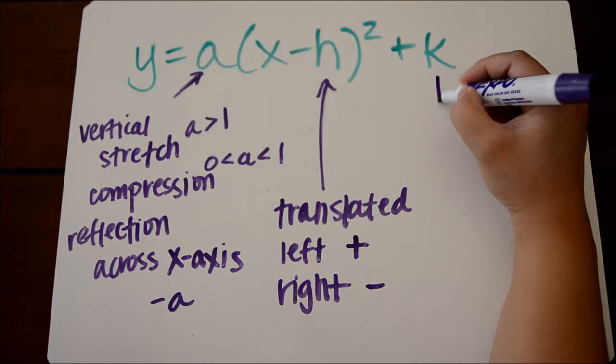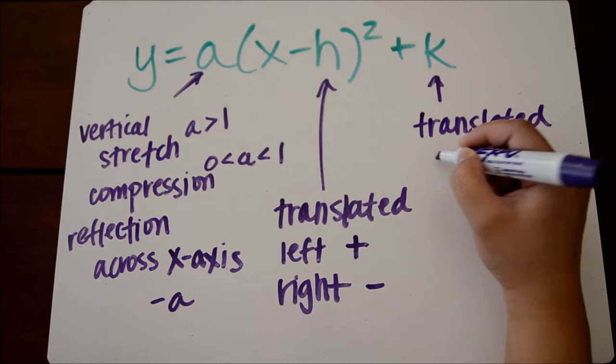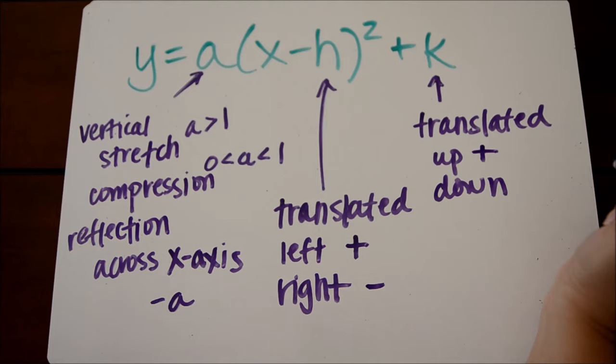Our k value tells us our translation up or down. But this does what you think it should do. If it's plus k, our graph translates up. If it's minus k, our graph translates down.